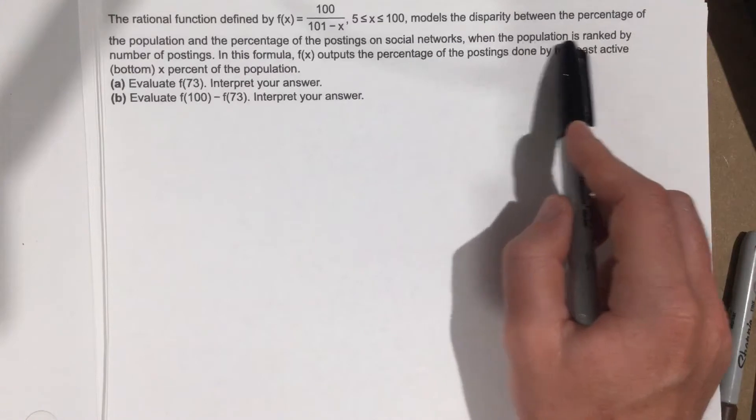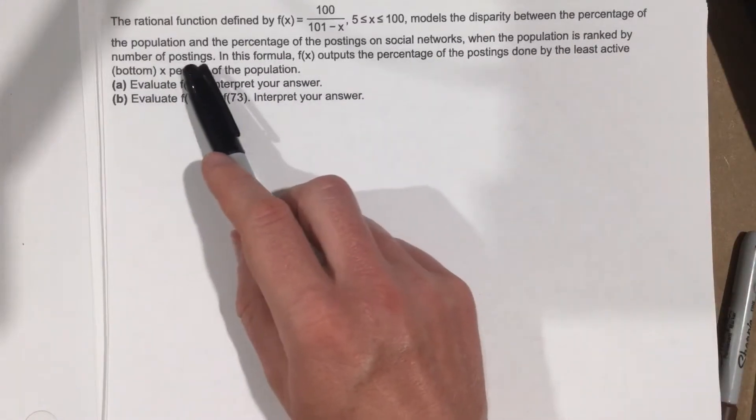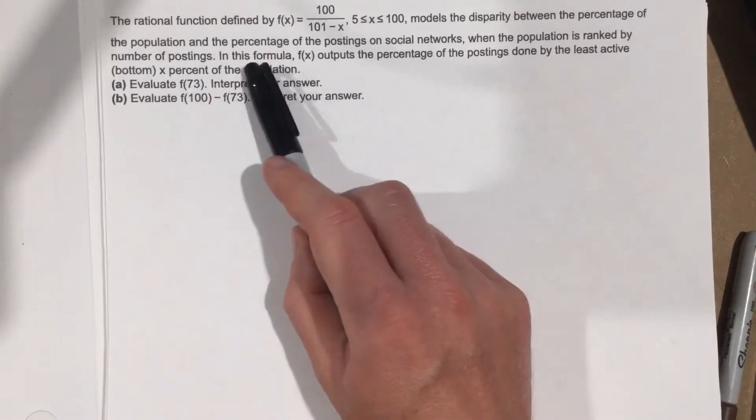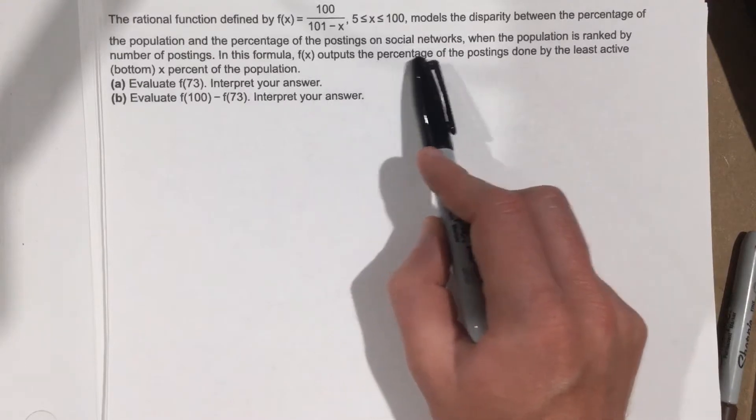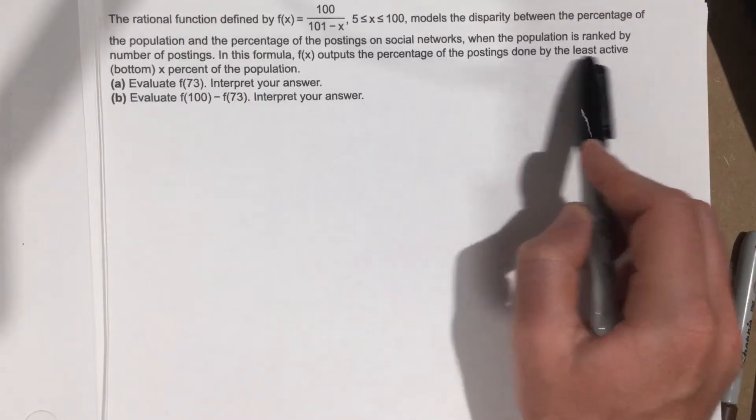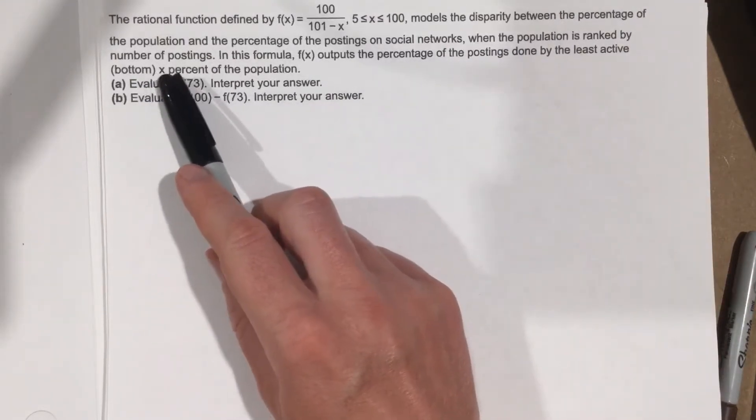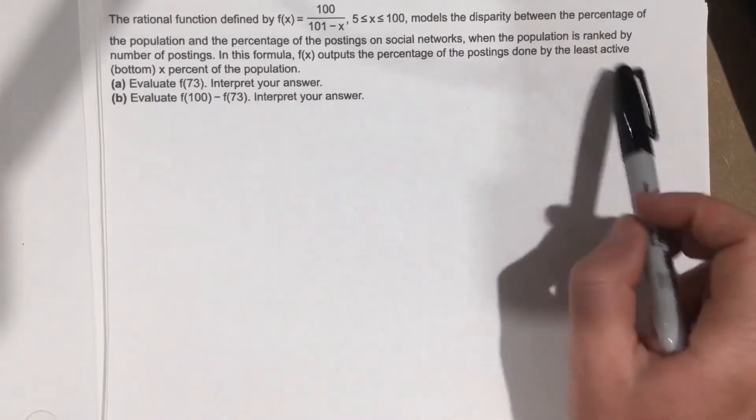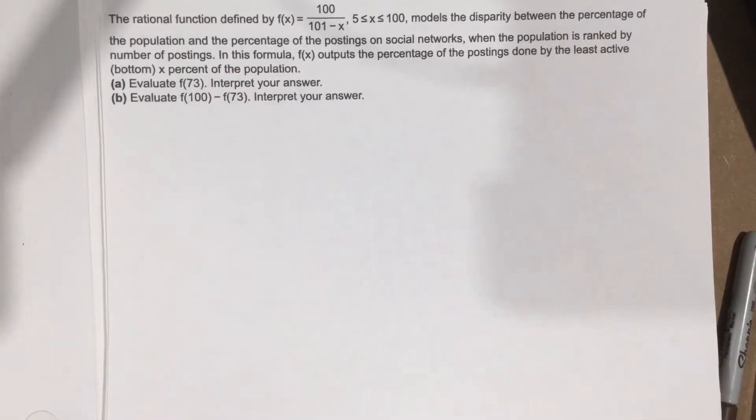When the population is ranked by number of postings, f(x) outputs the percentage of the postings done by the least active bottom x percent of the population.